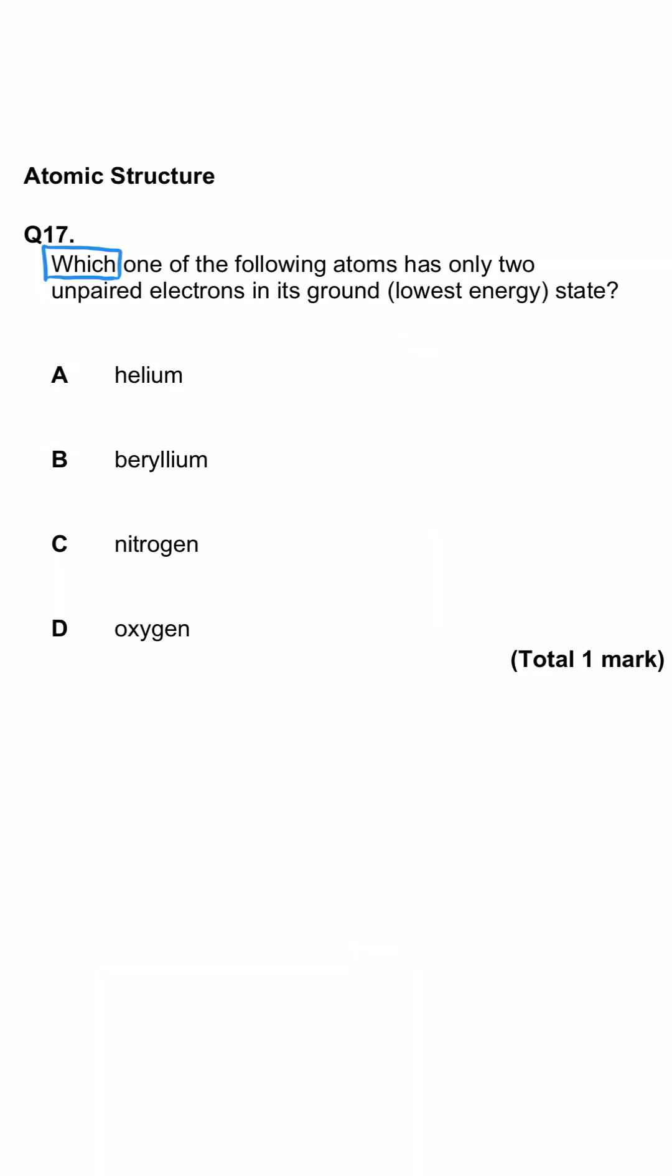Here we're being asked which one of the following atoms only has two unpaired electrons in its ground state, that's the lowest energy state. Two unpaired electrons, we're expecting it to be in the P subshell. Helium only has two electrons in total, so that's 1s2. Beryllium has got four electrons, so it's 1s2 2s2, so no unpaired electrons in those first two.